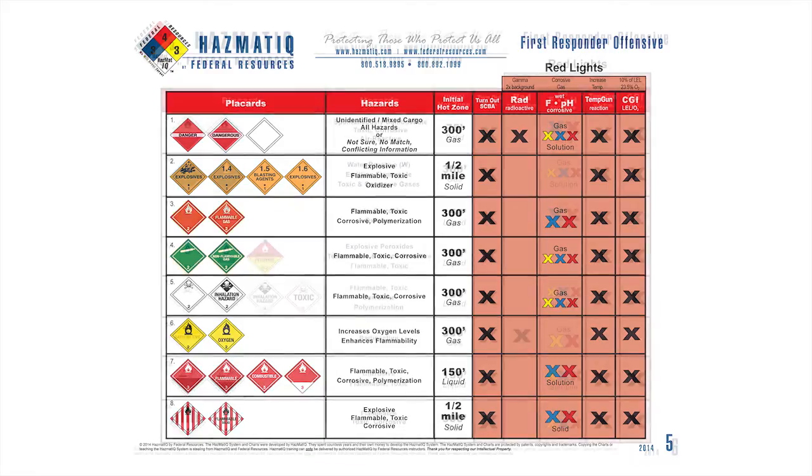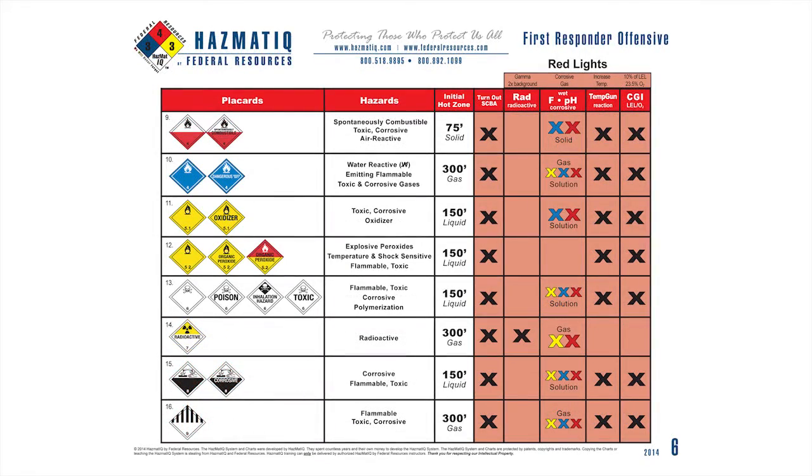As we're responding, we're going to try to gather more information using the container, the placard, and occupancy clues, and that'll change our size-up. So on this month's FRO, as we're responding, we get some more information. Crews on the scene can see this placard — it's a red placard with a three at the bottom and it says combustible. So now we're able to eliminate some of the hazards. Our above-the-line size-up already included all the possible hazards. As soon as you know that placard, look for charts number five and six and try to find a placard that matches.